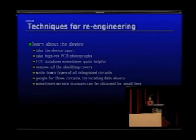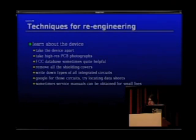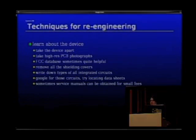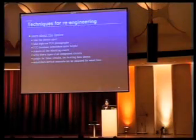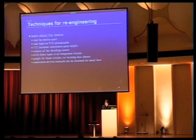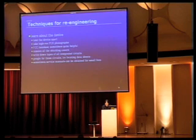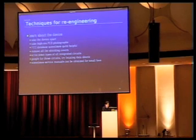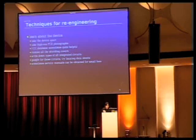When learning about the device, the first thing I did is take the phone apart and take high-resolution PCB photographs, which are useful since mobile phones don't tend to work when you disassemble them. The FCC database is sometimes helpful — unfortunately most of the really interesting information submitted to the FCC is confidential, so full schematics are not public, but you can still get some interesting hardware information from it.